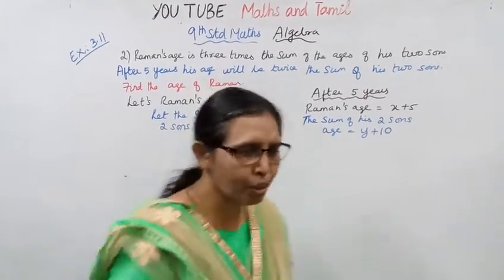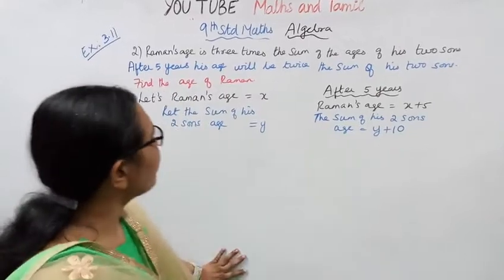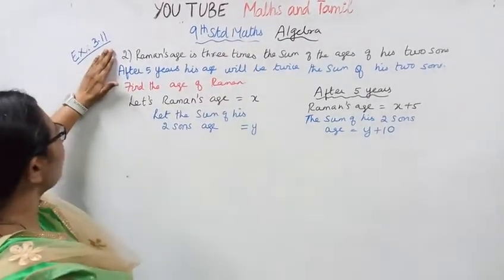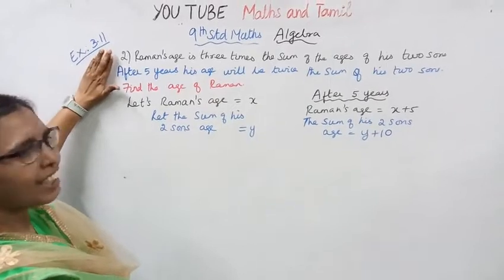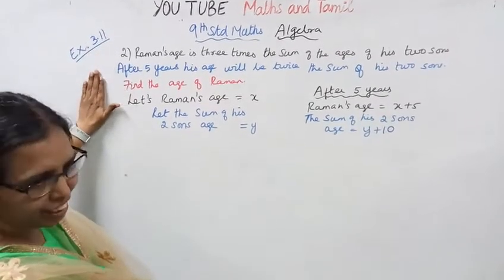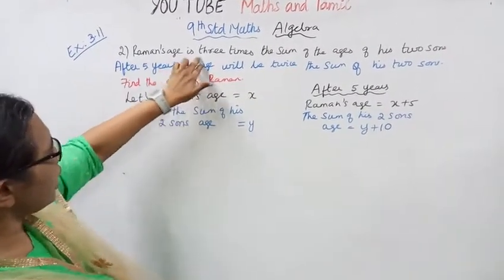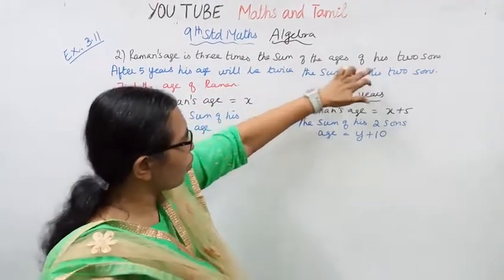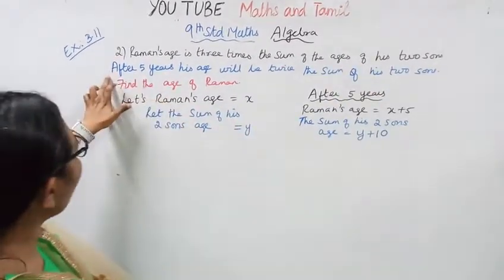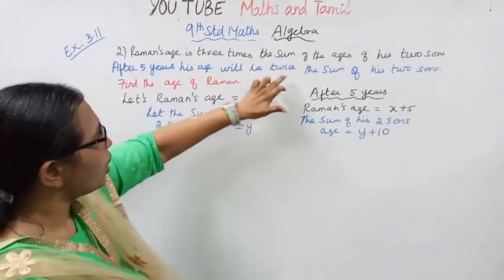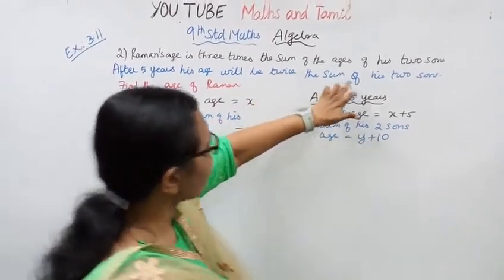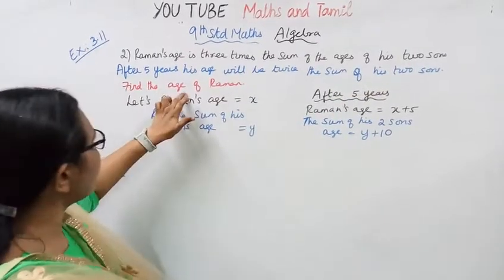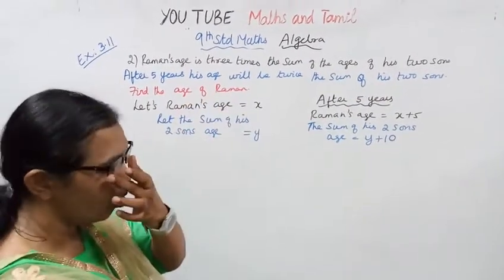Hello students, welcome to Max and Tamil channel. 9th standard Max Algebra, Exercise 3.11, second sum. Raman's age is 3 times the sum of the ages of his 2 sons. After 5 years, his age will be twice the sum of his 2 sons. Find the age of Raman.